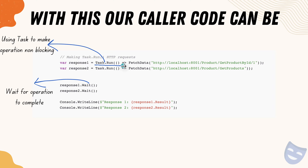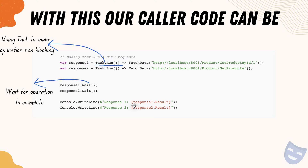You have to wait for the result. Since we don't have an await keyword here, you have to use the Wait method, which is available as part of Task. You need to ensure that the operation is fully complete before you print the line to see the responses. Let's see this in a demo so you can understand the details more clearly.